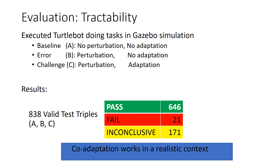646 times, the C case fixed the problem introduced in B, and in only 21 cases did C do worse. The remaining 171 cases showed no significant difference between B and C. This shows that our approach worked to complete missions involving real third-party robotic software running in a realistic but simulated environment.